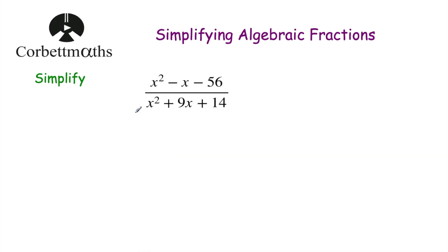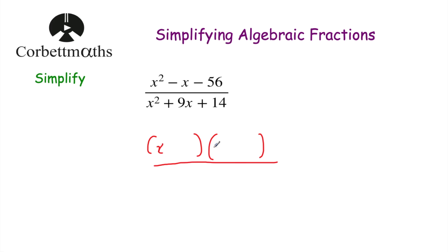Let's look at our next question. We've got a quadratic on the numerator and a quadratic on the denominator. To simplify, we factorise both and see if we can cancel. The question says simplify x squared minus x minus 56, all over x squared plus 9x plus 14. Factorising the numerator: we need two numbers that multiply to negative 56 and add to negative 1 — that's minus 8 and plus 7 — giving us x minus 8 and x plus 7.